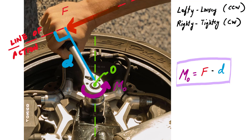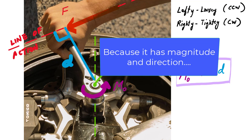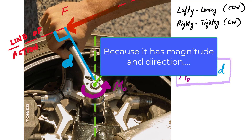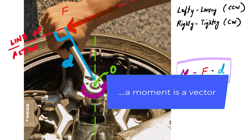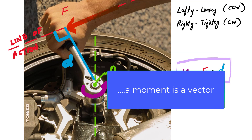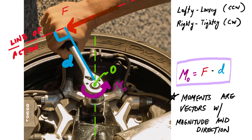You'll notice that the moment has a magnitude and a direction — clockwise or counterclockwise in a 2D world. Because it has both magnitude and direction, a moment is a vector.